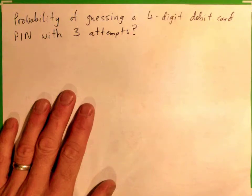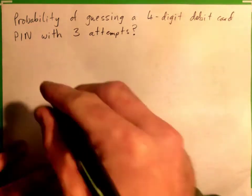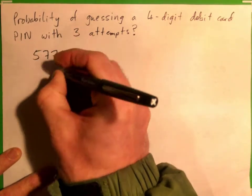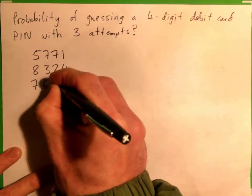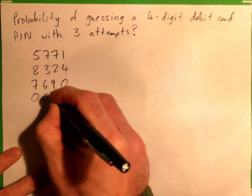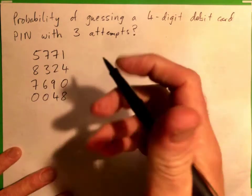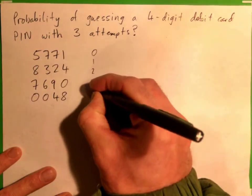We're going to guess a four-digit debit card PIN with three attempts and wonder about the probability of that. A four-digit debit card PIN looks like this — it could be 5771, or 8324, or 7690, or 0048, or whatever. The point is there are four digits, and any of these digits could be a zero, one, two, three, four, five, six, seven, eight, or nine.